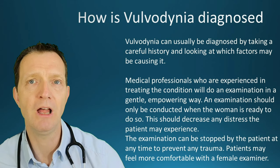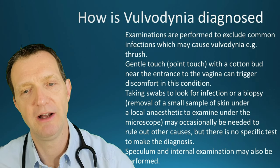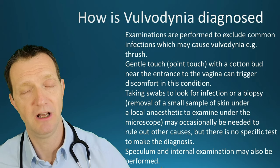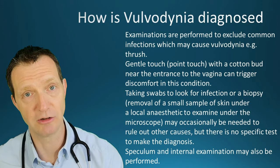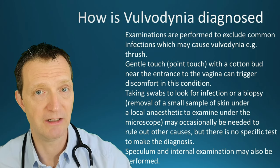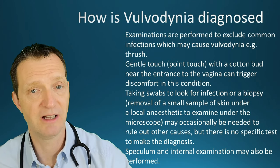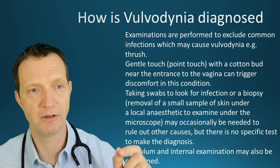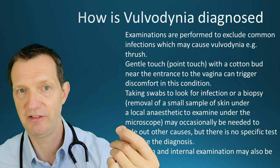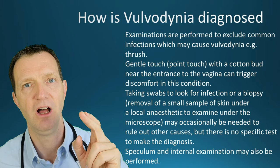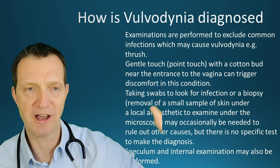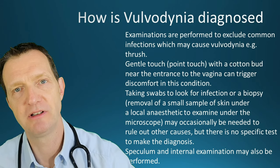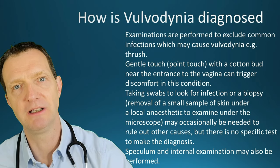During the examination there is a general inspection of the lower abdomen, palpation of the lymph nodes in the inguinal area (the groin), and examination of the outside of the vulva and vagina. There may be a speculum examination to look at the cervix and take swabs to rule out other causes. There may also be a point-touch examination using a cotton bud or a small plastic loop — no sharp parts — to gently identify where the area is tender. An internal examination may also be performed.